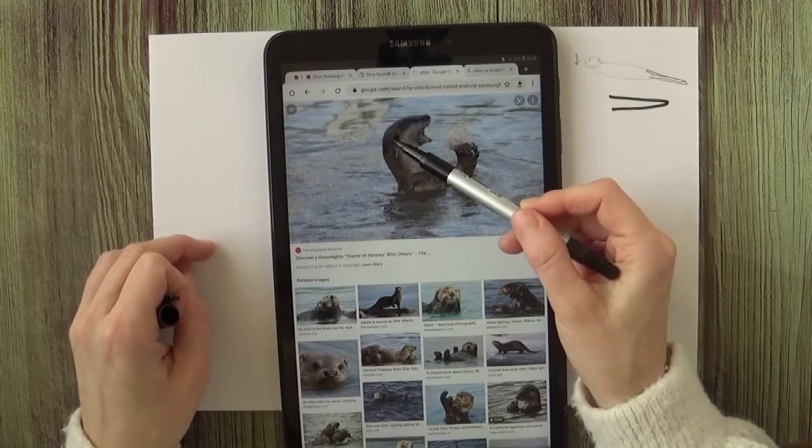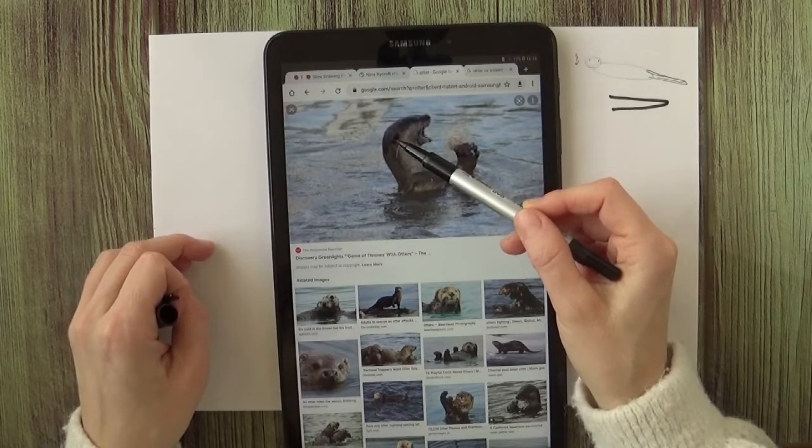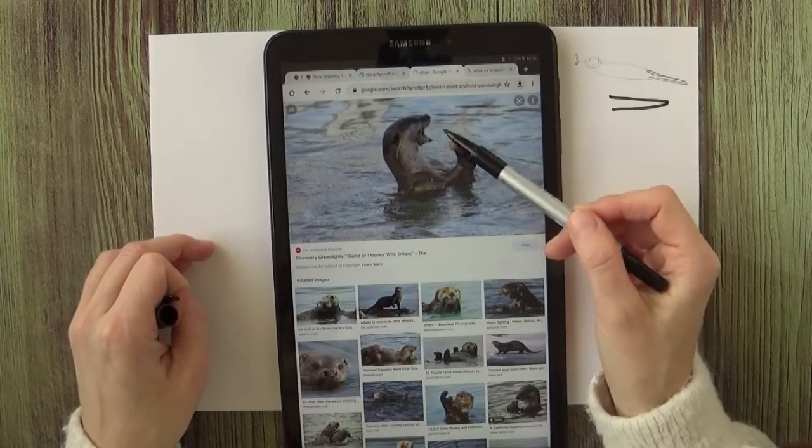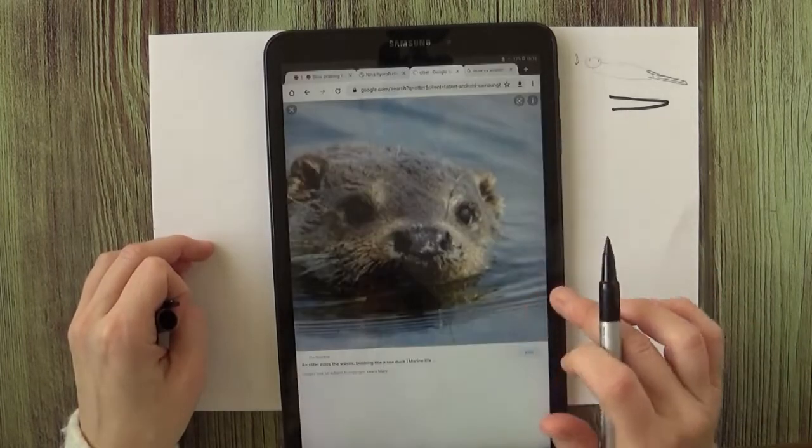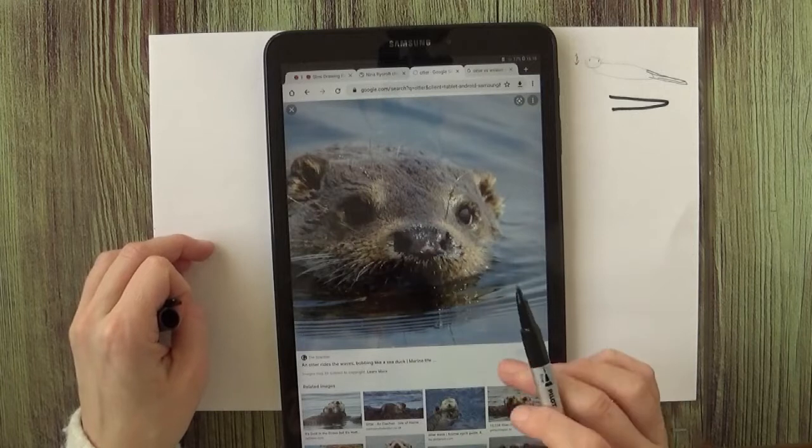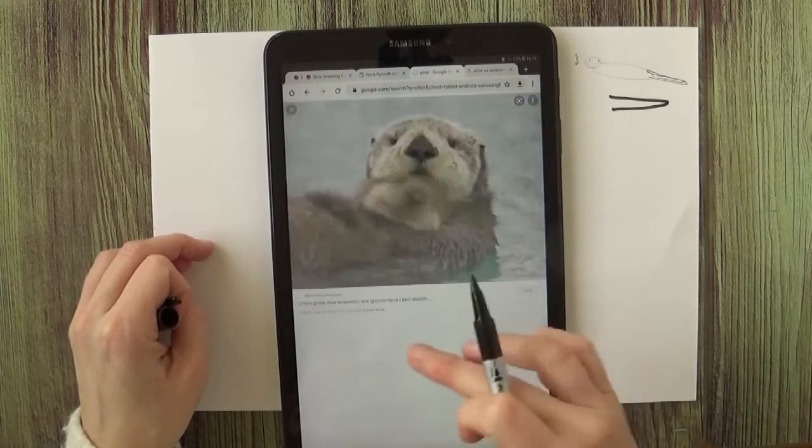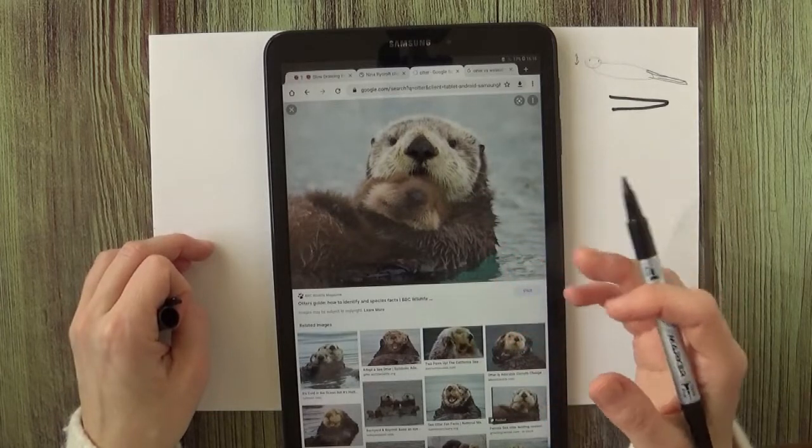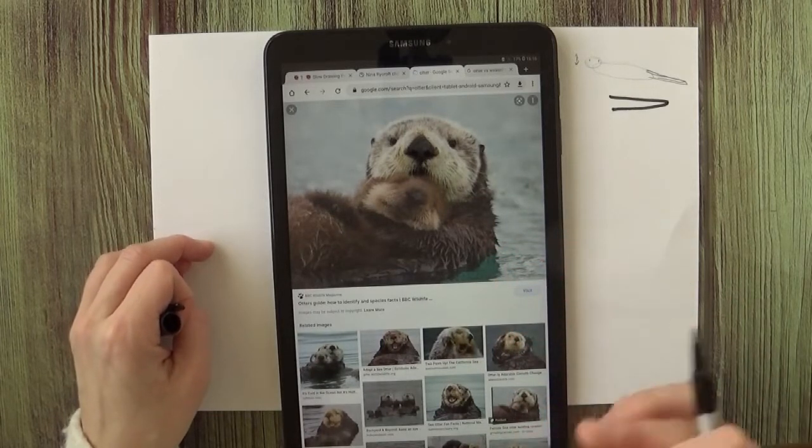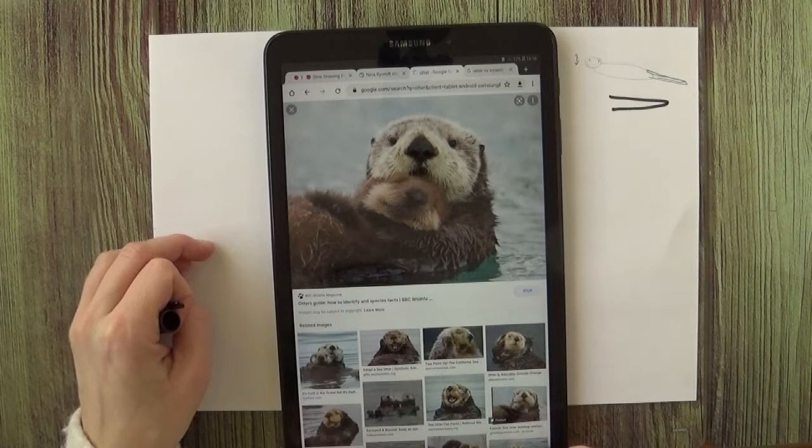For instance, with otters, you can see that the ear is placed much further and they can turn it a lot because you can see on some other photos, you'll see the ear is not in the same position. It depends on the species, of course, but it is different than in some other species that we all know very well, like in cats or dogs.